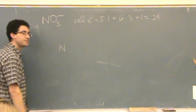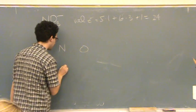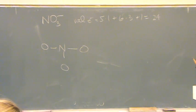Nitrogen's in the middle. Oxygen's all around. 2, 4, 6. Draw the bonds first. 6 of 24.